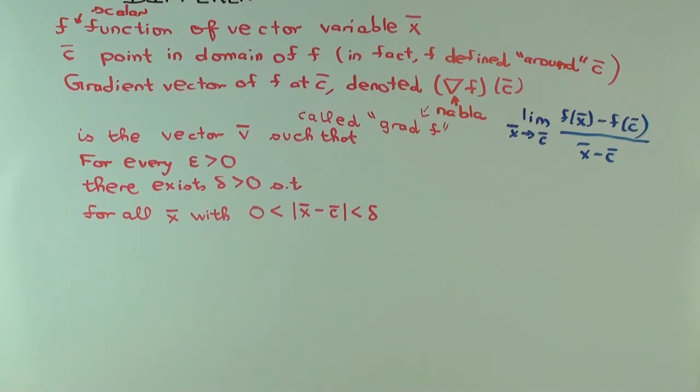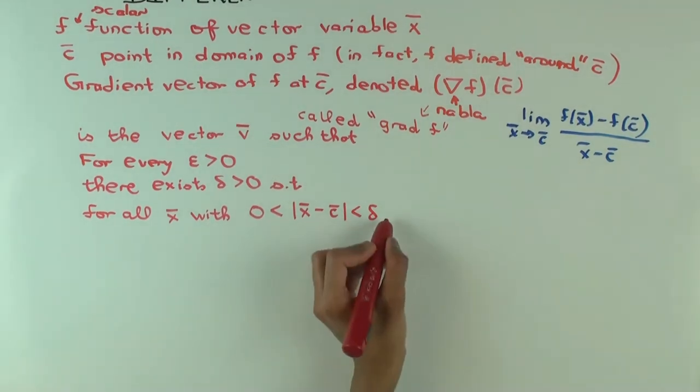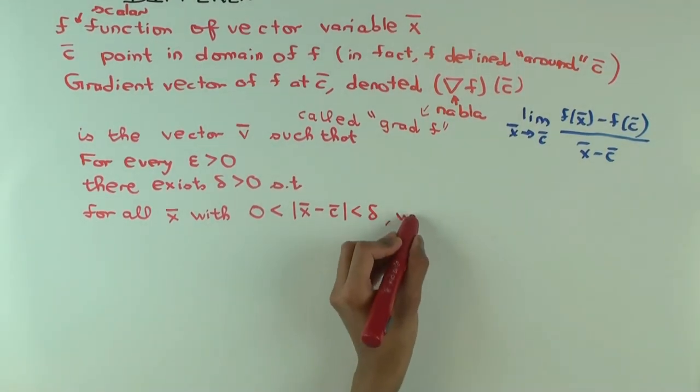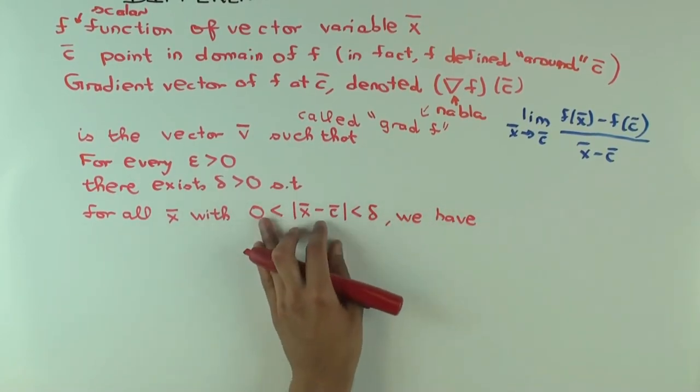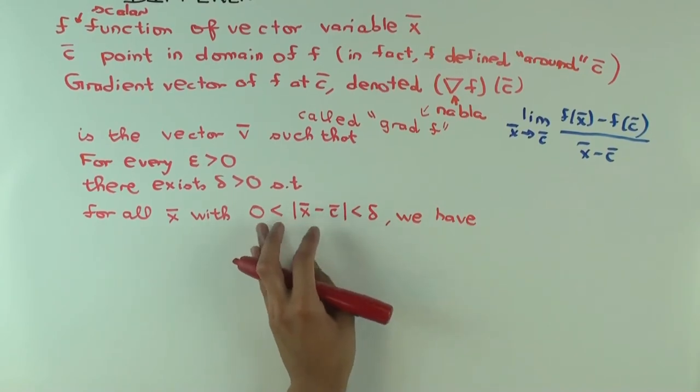Distance between x and c is less than delta. Less than delta. But it's not equal to c itself. But basically, it's saying x is delta close to c, but not equal to c itself. Okay. So, you should have watched before this, or you should be aware at any rate, of the corresponding definition of limit for a function of a vector variable. This is sort of similar. It's not directly using that, but it's similar.